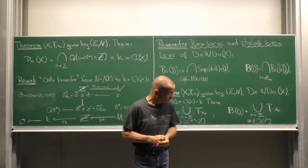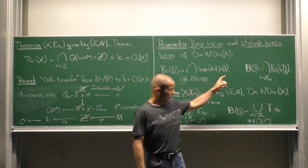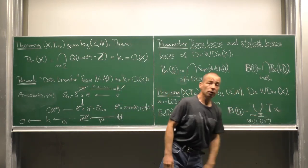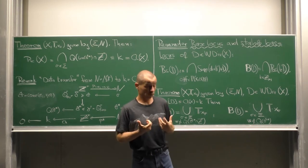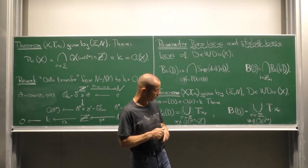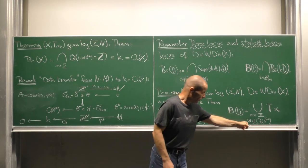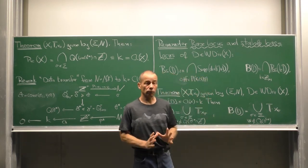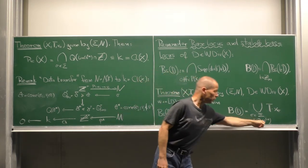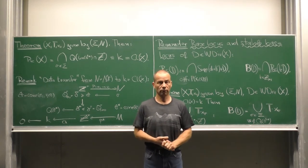For the stable base locus, this is the union of all torus orbits through limit points x sigma such that the divisor class w is not contained in the image of the cone sigma hat star.